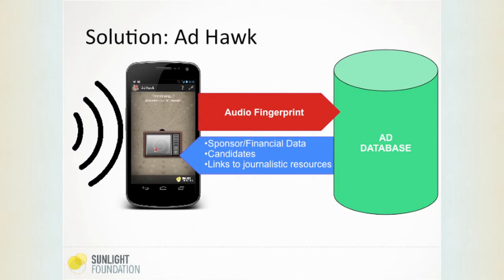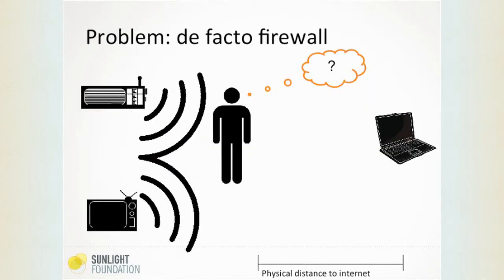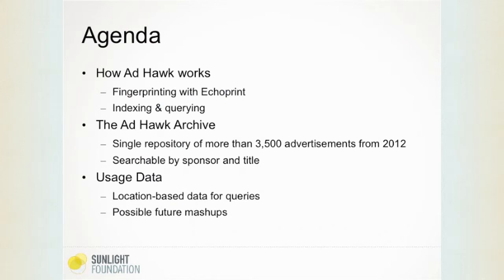The point is to catch the voter at just this moment in their viewing of an ad so that we can fill in the blanks and let them know the crucial information about the vested interests in the messages that they're seeing. Today I'd like to talk about three main topics: a high-level walkthrough of how Ad Hoc itself works, a look at the Ad Hoc archive which Ad Hoc depends upon to return results to users, and usage data from users who have voluntarily chosen to share information with us.